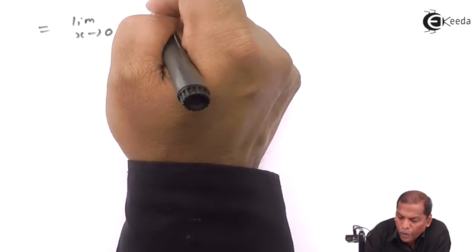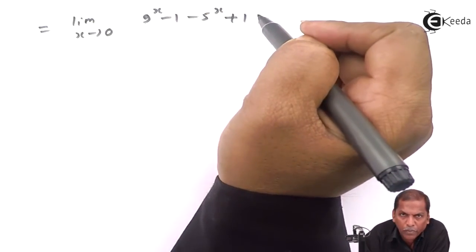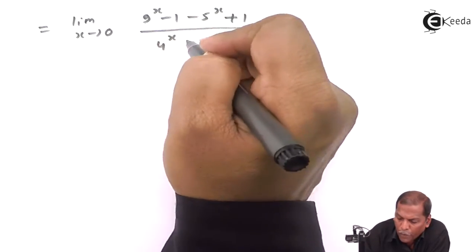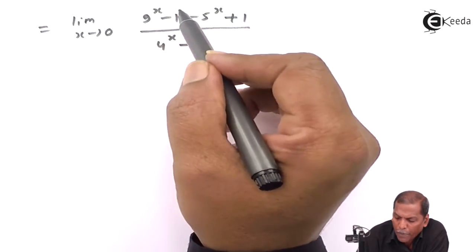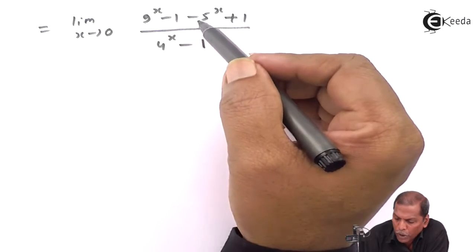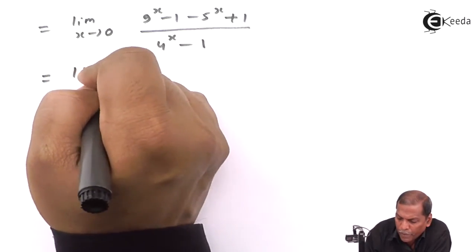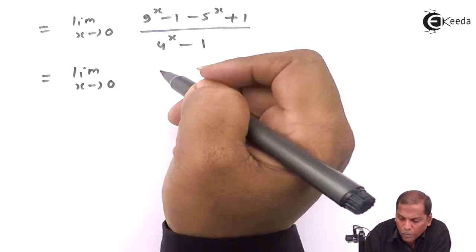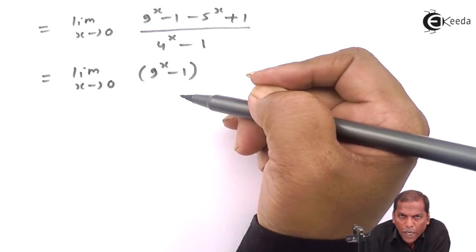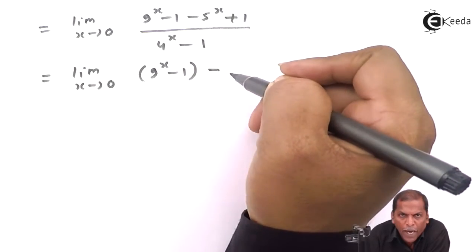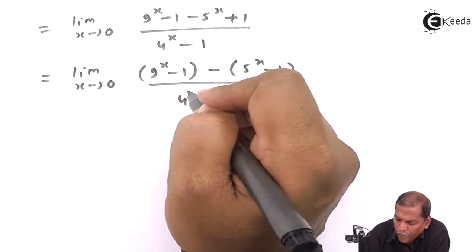In the numerator we write nine raised to x minus one, and then minus five raised to x plus one, upon the denominator four raised to x minus one. This means in the numerator, whenever we have a positive term we write minus one, and whenever we have the negative term minus five raised to x, we write plus one. Then we factor: nine raised to x minus one in the first bracket, and from the remaining two terms minus five raised to x and plus one, we take minus sign common, giving five raised to x minus one in the bracket, divided by four raised to x minus one.